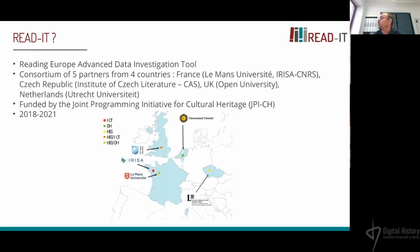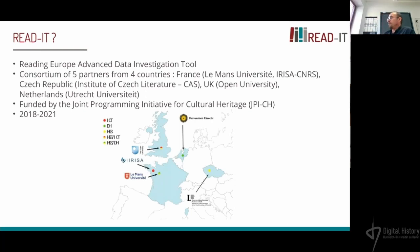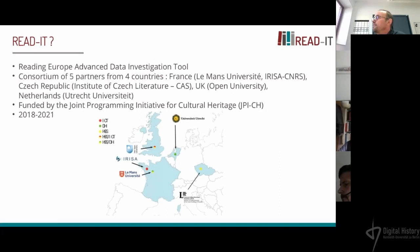It's a consortium of five partners from four countries. We have two partners in France: the University of Montpellier, where I belong, and computer scientists from Rennes in Brittany. From the Czech Republic, the Institute of Czech Literature. We also have colleagues at the Open University in the UK and the DH Lab from a university in the Netherlands.